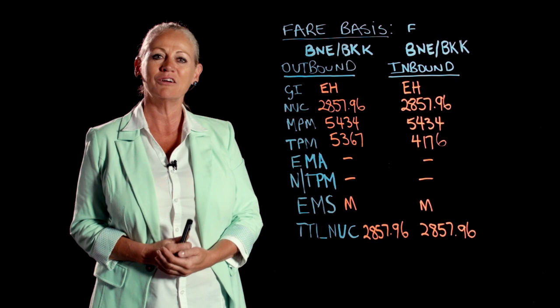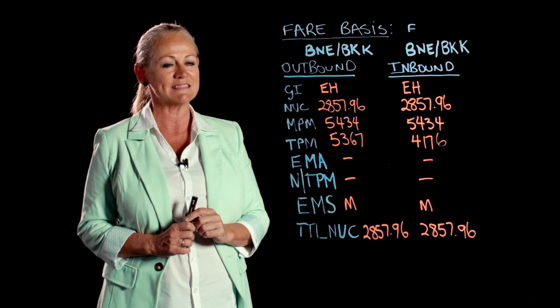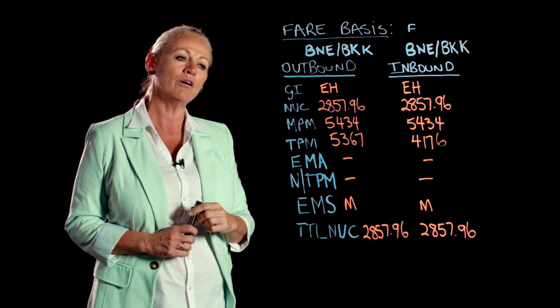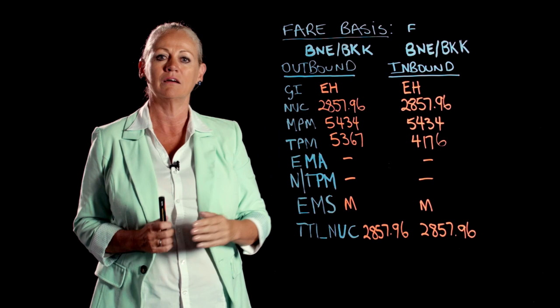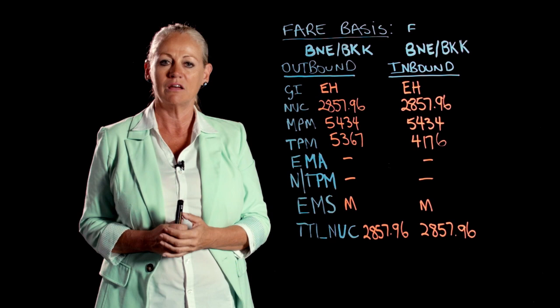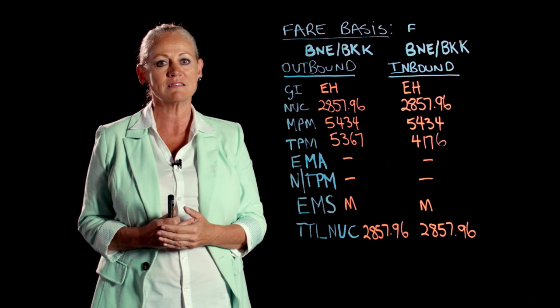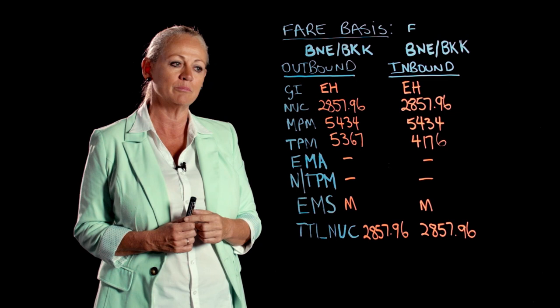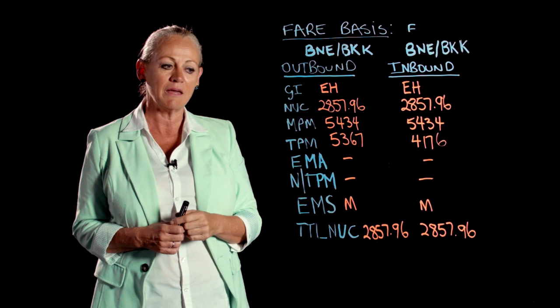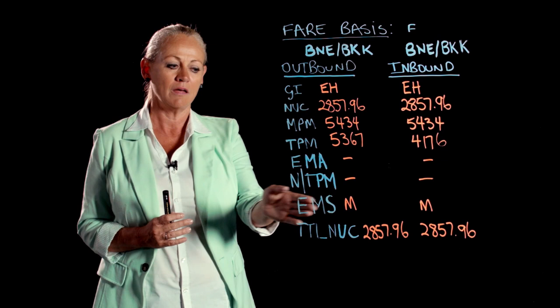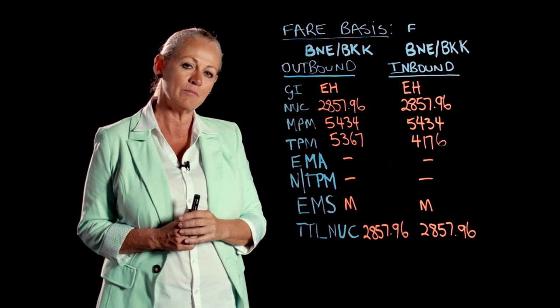We're now going to put our fare onto the fare calculation ladder. The fare basis for this journey is F, which is first class. So we've got outbound journey is Brisbane to Bangkok, EH. The NUC I've looked up for you. Now remember with the NUC, when you're working on return journeys, if a return NUC is published, you need to look up the return NUC and halve it. You know it's a return NUC because it has an R at the end. So half of the return is 2857.96. We've got our MPM. Our TPM is lower than the MPM, which is great — it means we don't need any EMMA. There's no new TPM. Our journey is in on miles, so our total NUC remains the same as our outbound NUC of 2857.96.